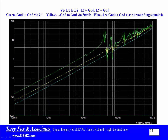Here are three different situations: a via going from L1 to L8 where L2 and L7 are both ground planes. The green line is L1 to L8 with the ground-to-ground via about two inches away, and you can see that resonant peak on the log-log scale.